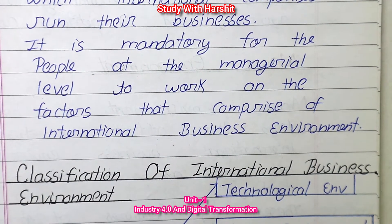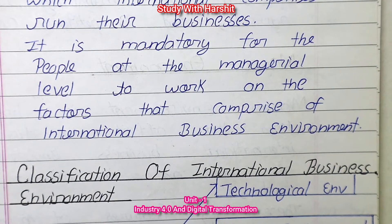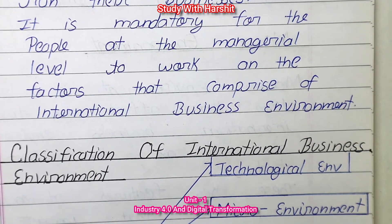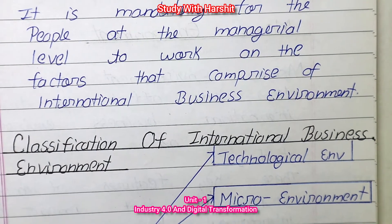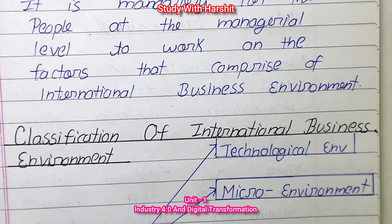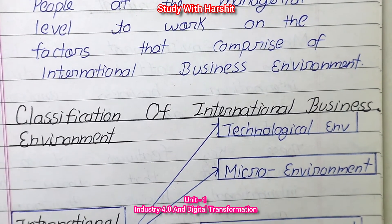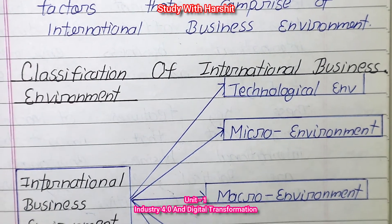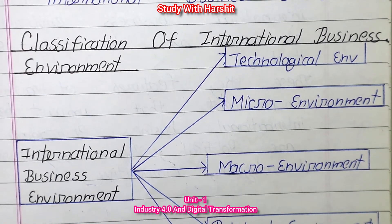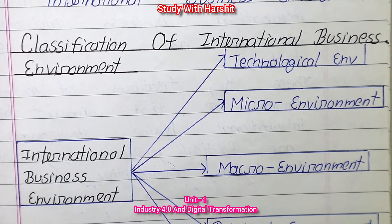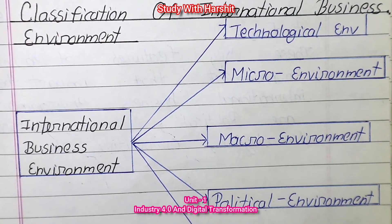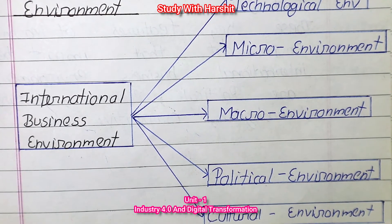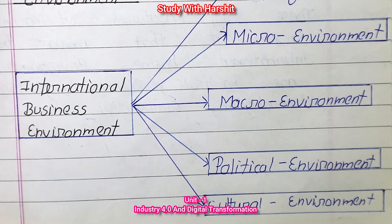The classifications of the international business environment are: first, technological environment; second, micro environment; third, macro environment; fourth, political environment; and fifth, cultural environment.